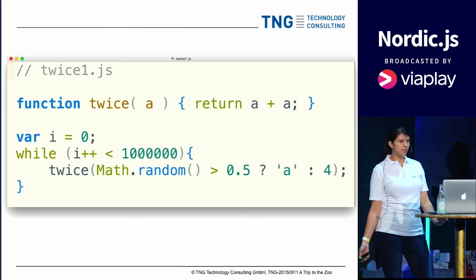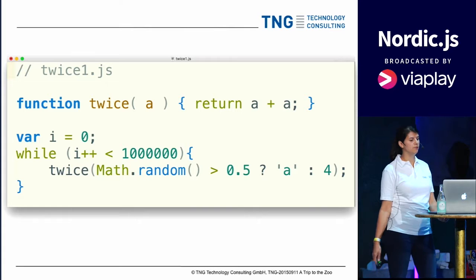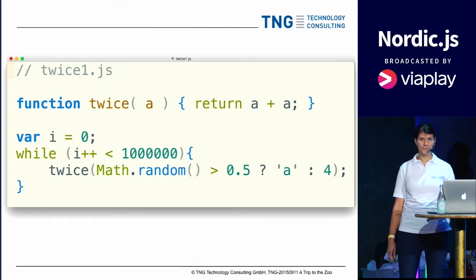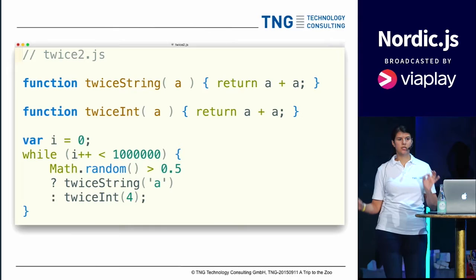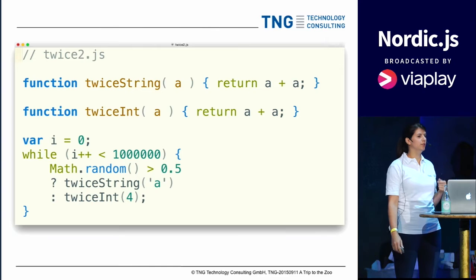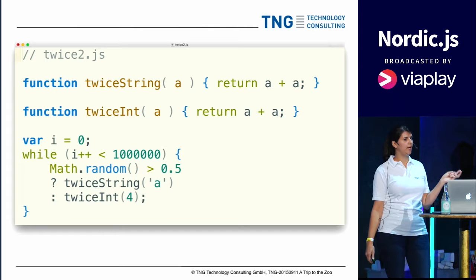Here's an example. I have a function 'twice' — it takes an argument A and returns A plus A. When called on an integer you get twice the integer; when called on a string you get the string concatenated with itself. I'm calling this a million times, randomly either on the string 'A' or the integer 4. Now here's the same example written slightly differently — I have two functions, 'twiceString' and 'twiceInt', that do exactly the same thing, but twiceString is only called on strings and twiceInt is only called on integers. Again I'm calling this a million times, randomly calling each function.